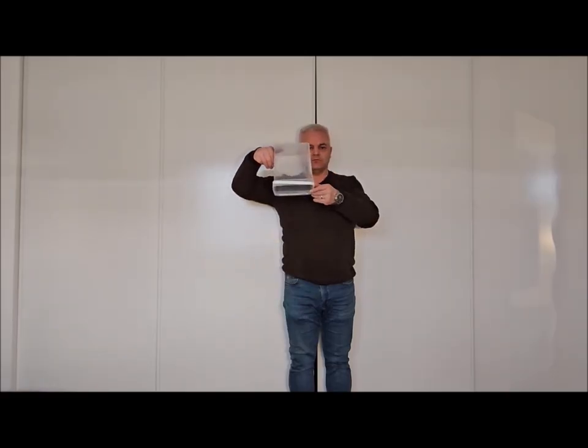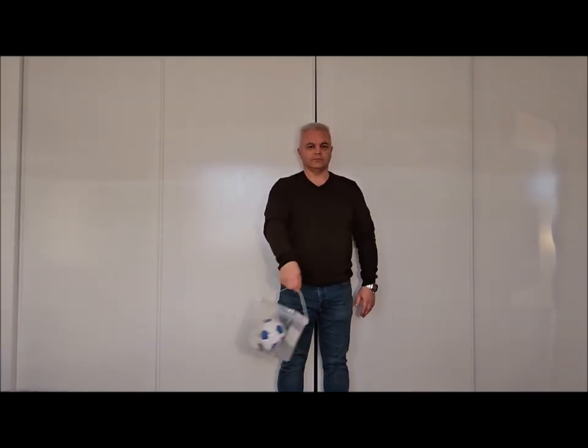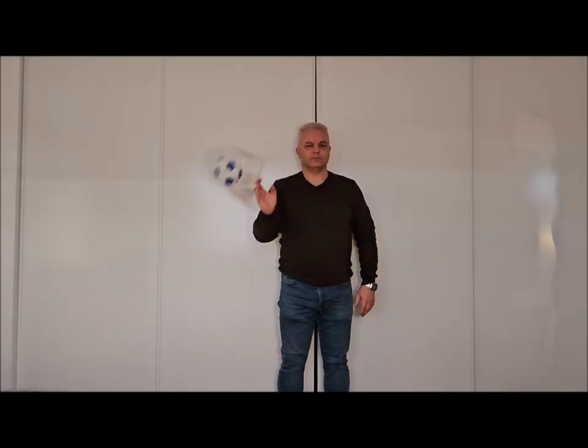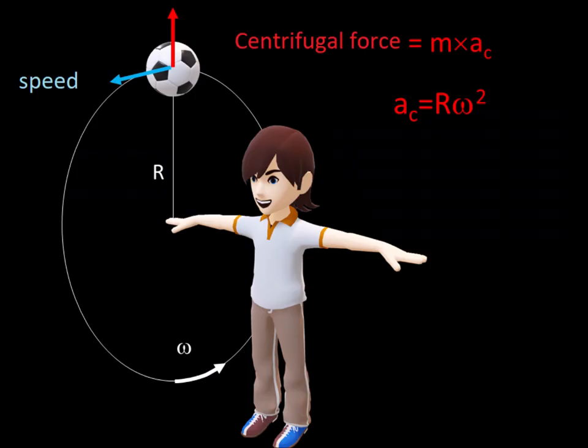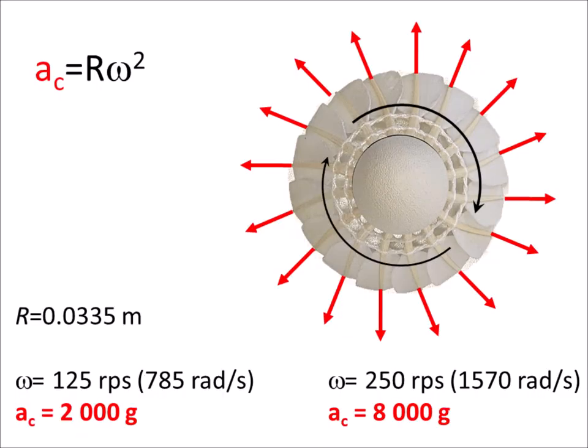An object falls due to its weight, but a centrifugal force can largely overcome this weight. The centrifugal force depends on the mass m of the object and the centrifugal acceleration ac, which scales as the radius of the circular trajectory and the square of the spinning rate omega. In such a thrill ride, you can experience acceleration up to 5G. For the shuttlecock, a spinning rate of 125 rotations per second corresponds to a centrifugal acceleration of 2000G.